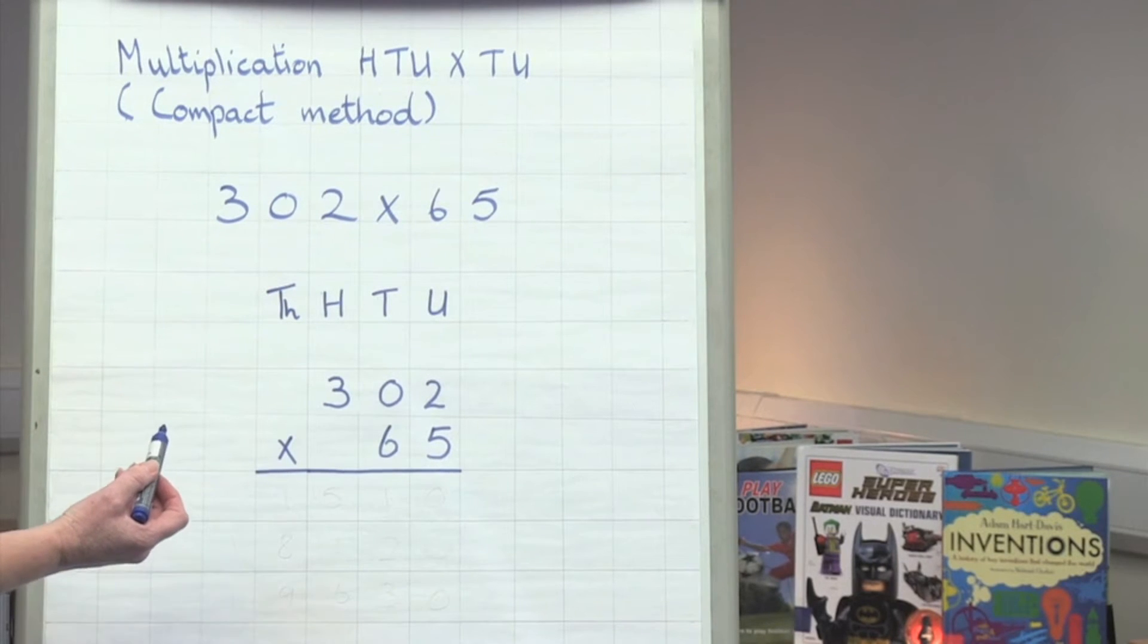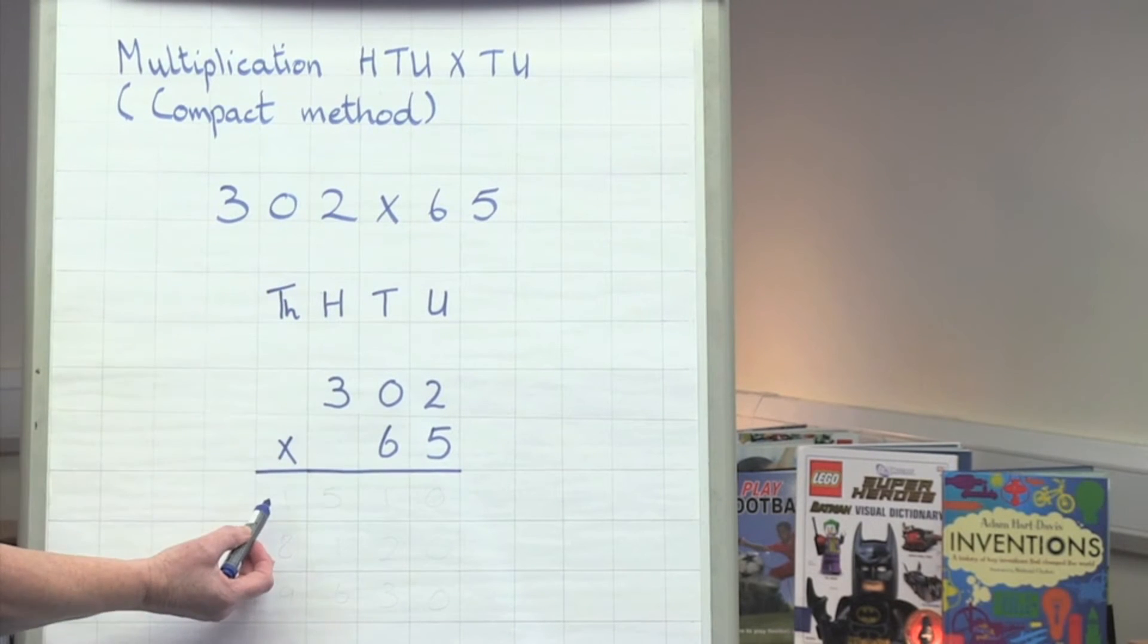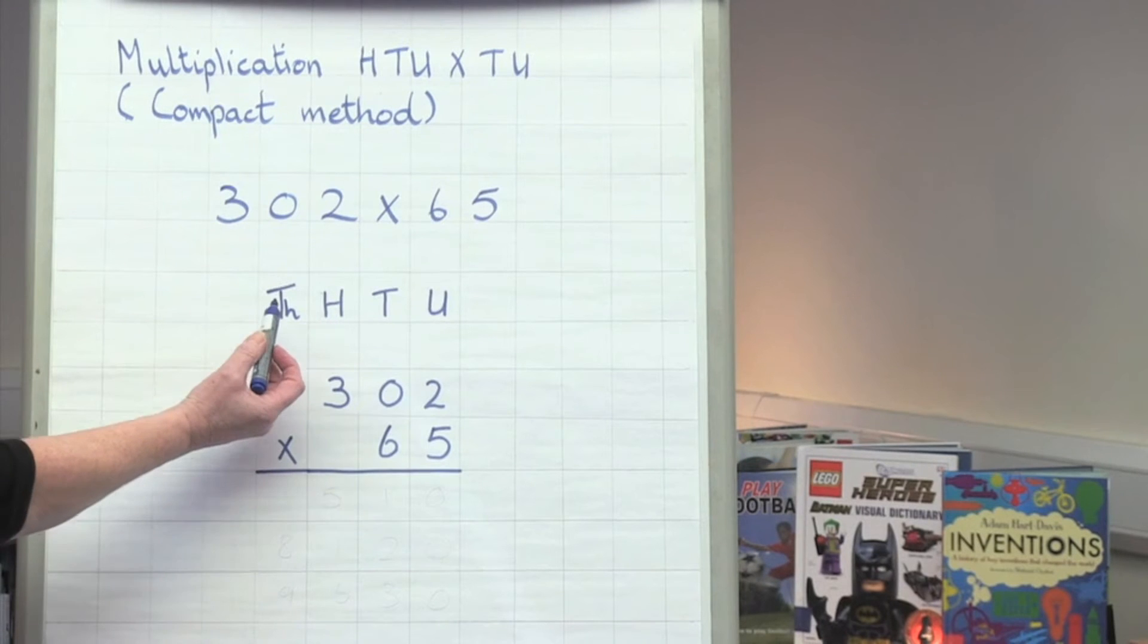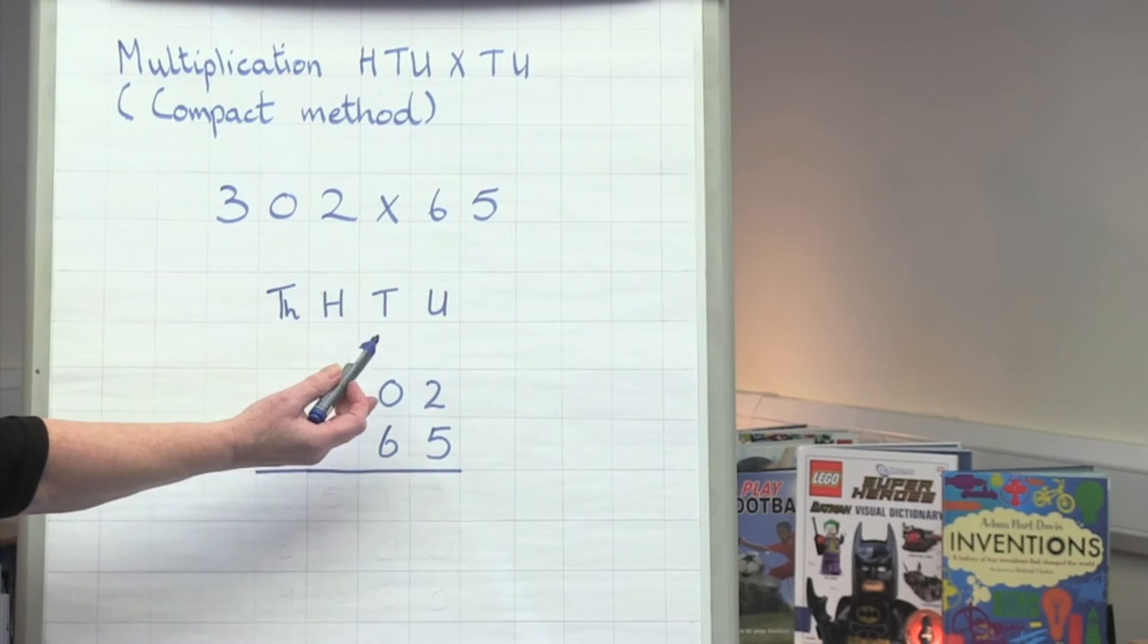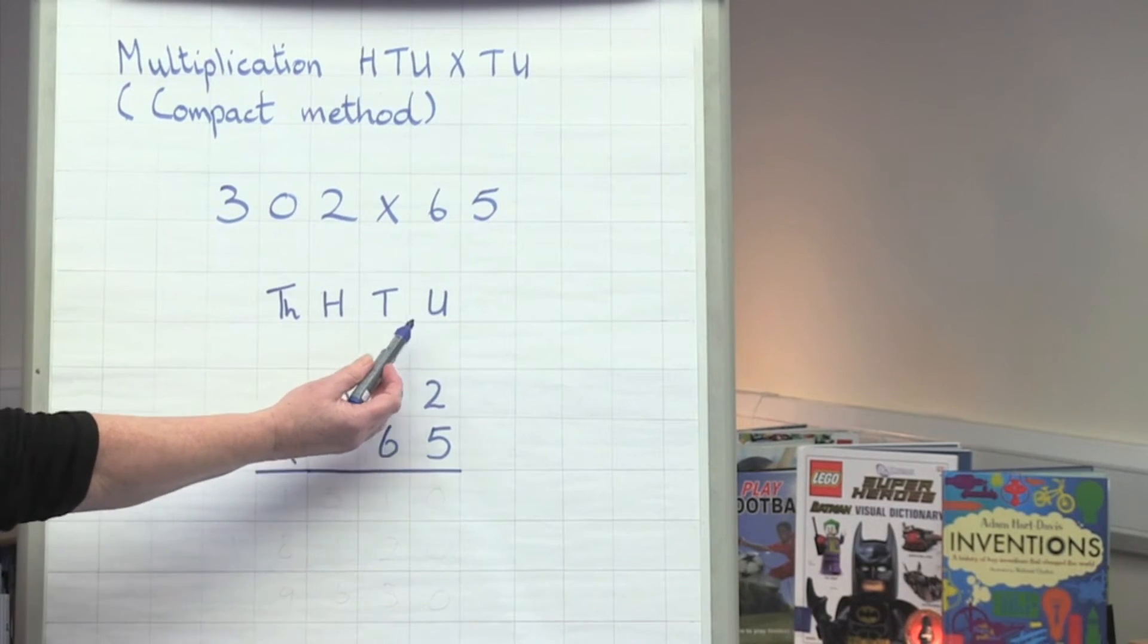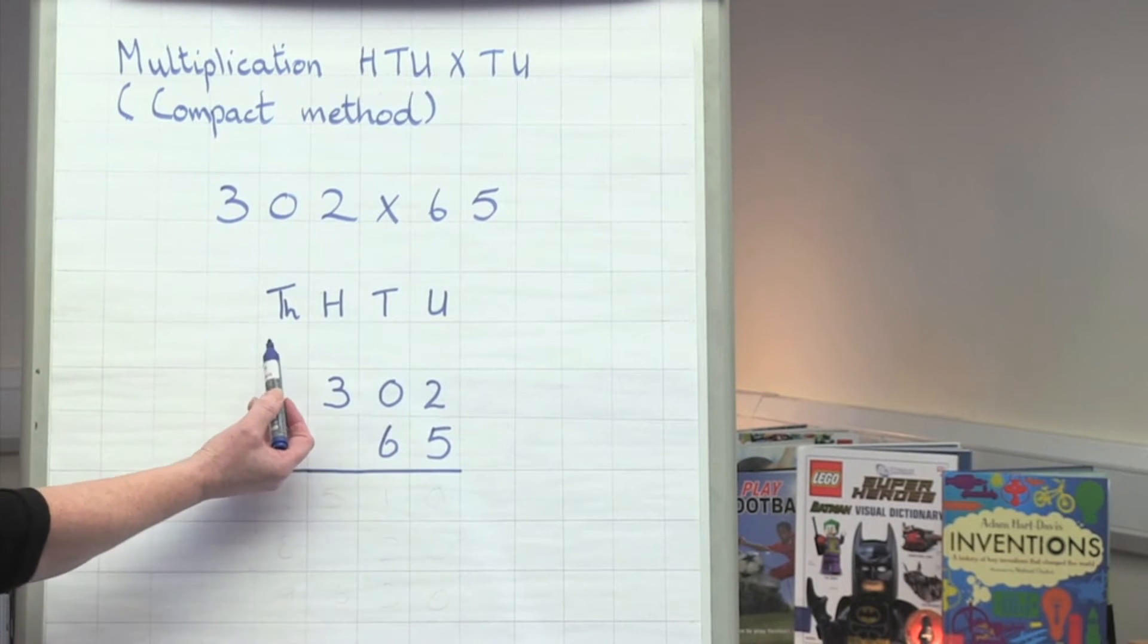First rewrite it in the column format. I've added in thousands because my answer is likely to be longer than three digits. Leave a clear space for your working out.